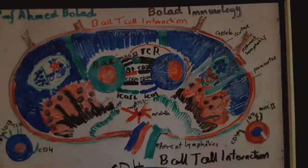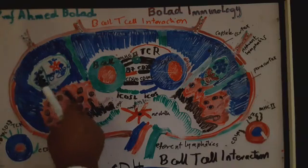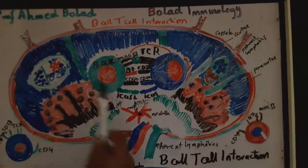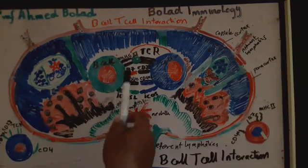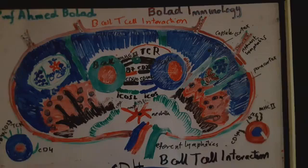The plasma cells are of short life and they leave the secondary lymphoid organs — that is, they leave the spleen and lymph nodes — for the bone marrow, where they become long-lived plasma cells and produce antibodies with high affinity.